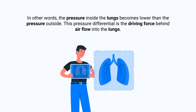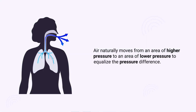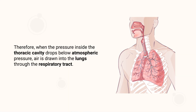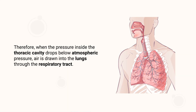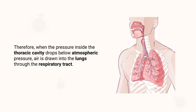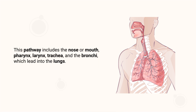In other words, the pressure inside the lungs becomes lower than the pressure outside. Air naturally moves from an area of higher pressure to an area of lower pressure to equalize the pressure difference. Therefore, when the pressure inside the thoracic cavity drops below atmospheric pressure, air is drawn into the lungs through the respiratory tract.